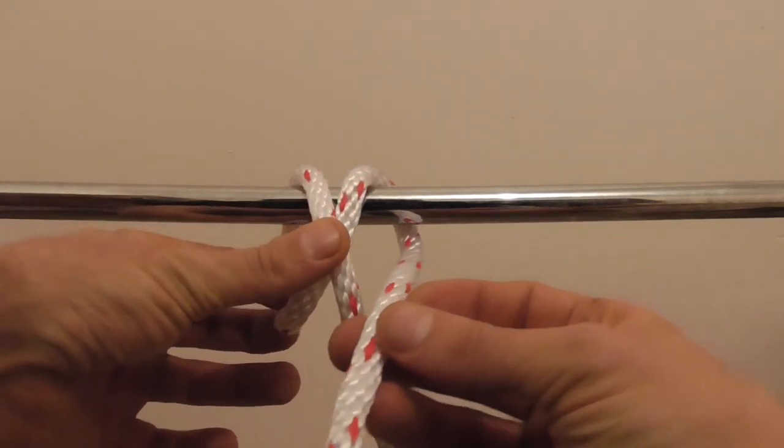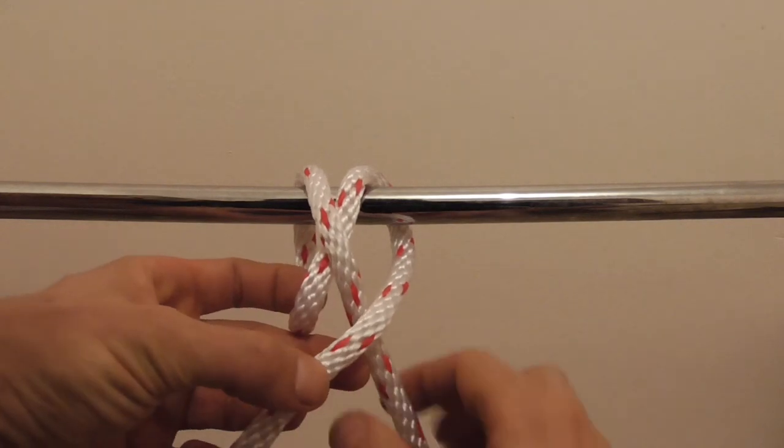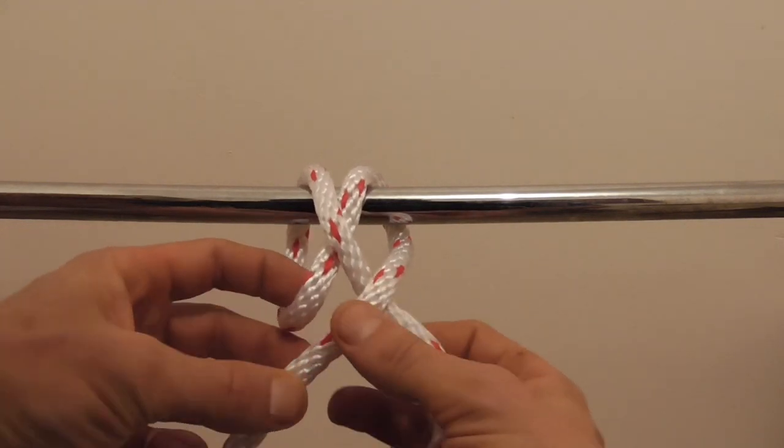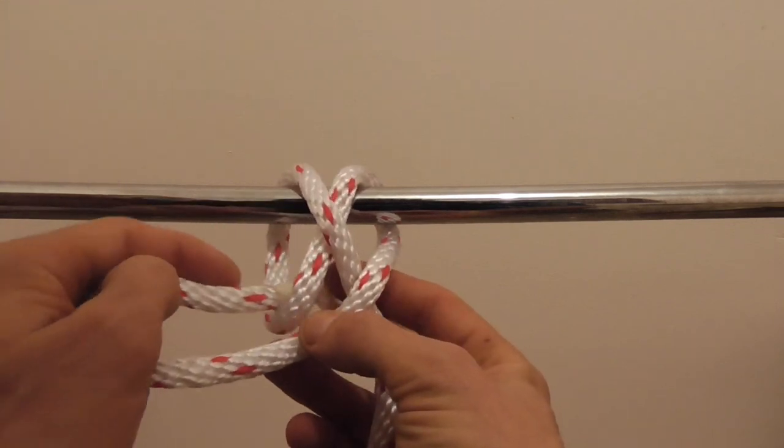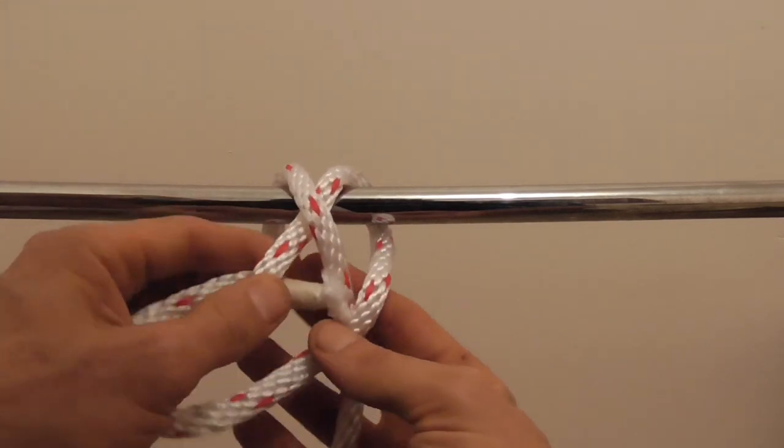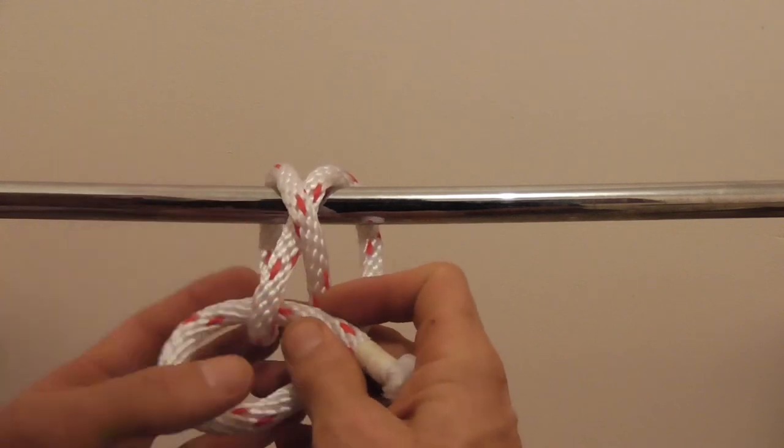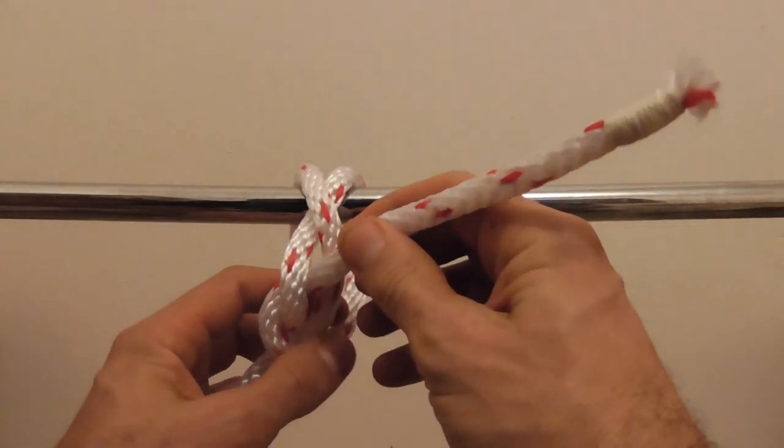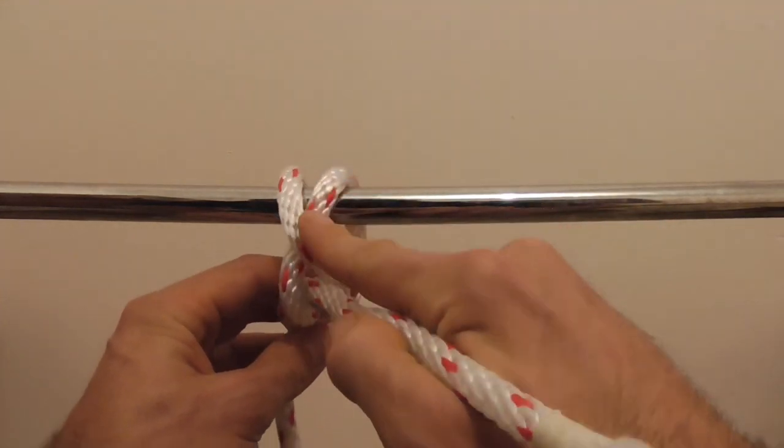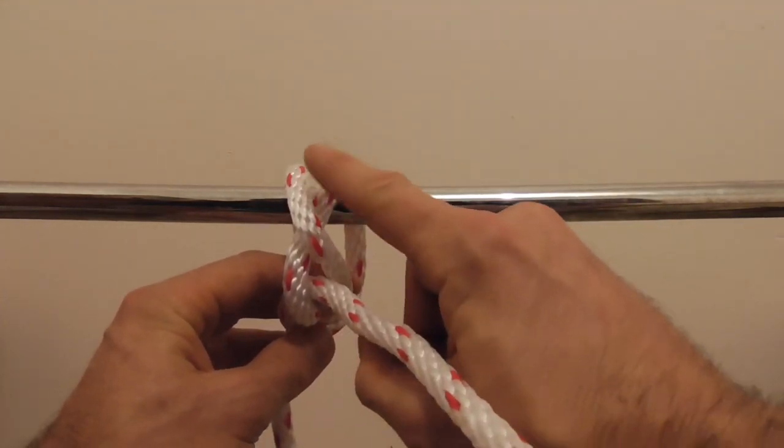Take the working end over that standing part through the bottom lower loop, and then take it above that X here and then through the upper right-hand loop.